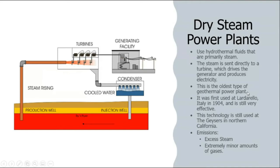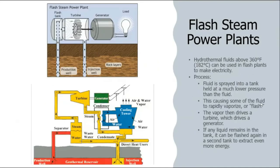The second type is flash steam power plants. This works when the temperature is around 182 degrees Celsius to generate electricity. The principle is the same — we use steam under high pressure — but here there are some modifications. We put the fluid into a separator.